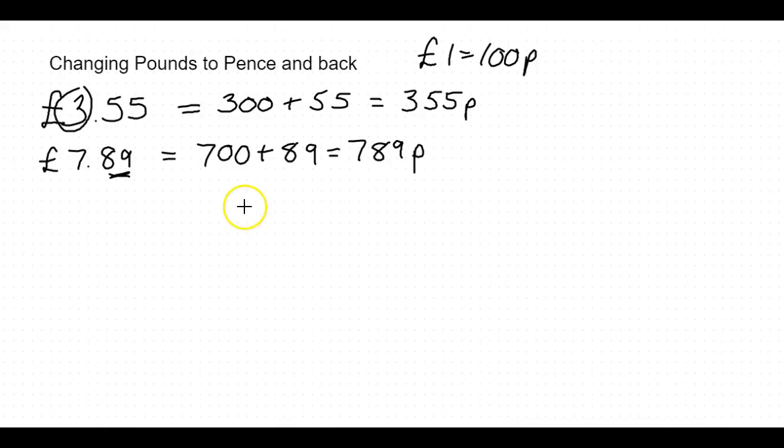Now to go the other way, let's suppose we have 682p and we have to change it to pounds. Well the first thing you do is you look at how many sets of 100, because remember we said that every set of 100 pence is one pound. Well here we've got 600 pence, so that's 600, and then 82 pence left over.